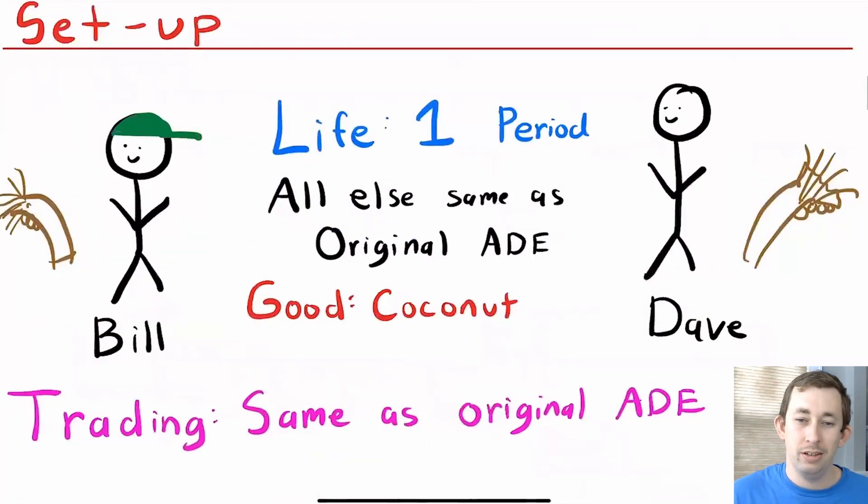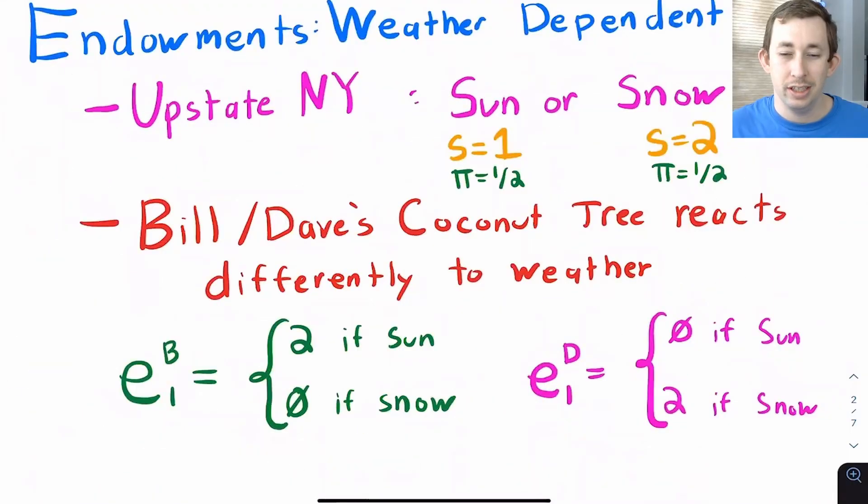The setup for this Arrow-Debreu world with uncertainty is gonna be the same as before. The only difference is going to be that these two people, our friends Bill and Dave, are going to only live one period. The good that we're talking about is still the coconut and the trading mechanism is still the same as in those original Arrow-Debreu equilibrium videos. The main difference in this Arrow-Debreu world is that our endowments are going to be dependent on the weather.